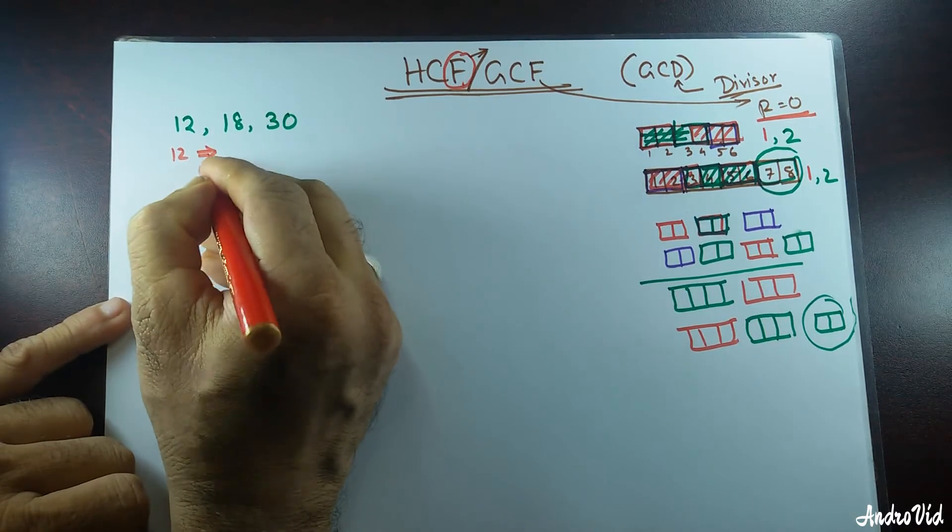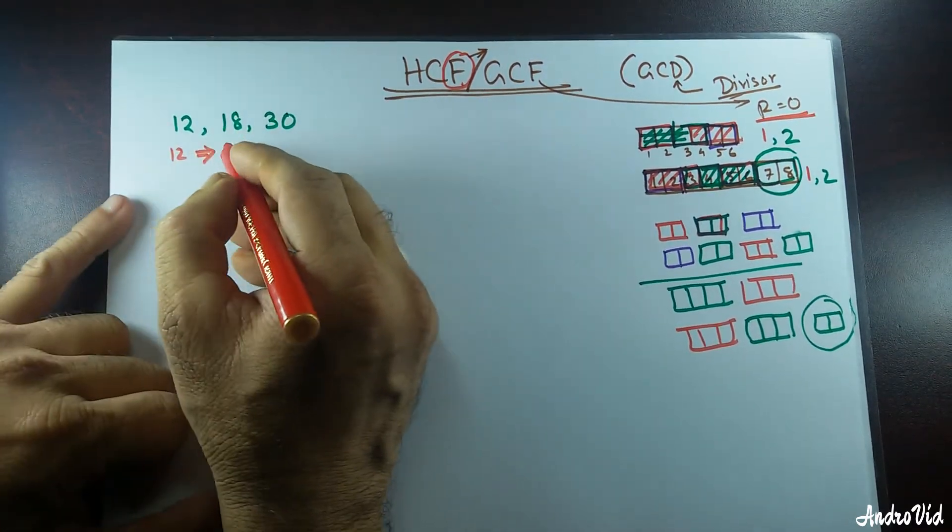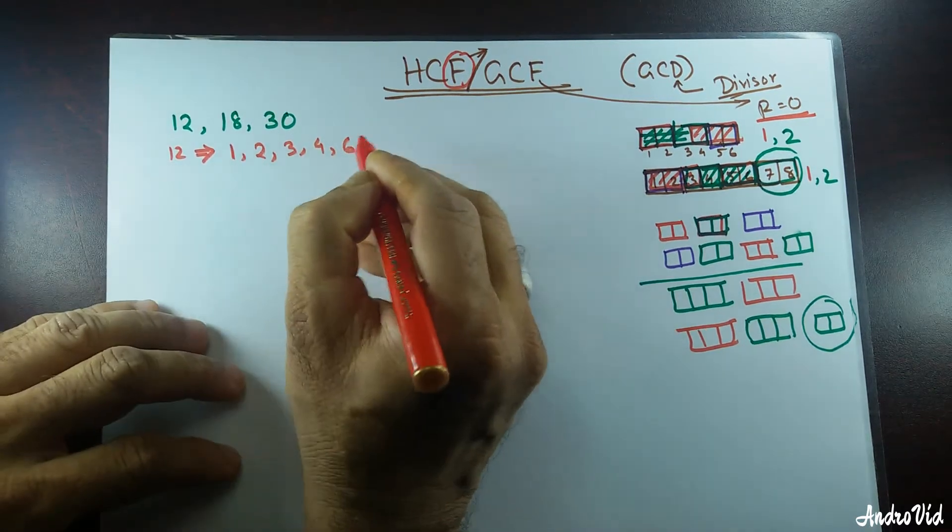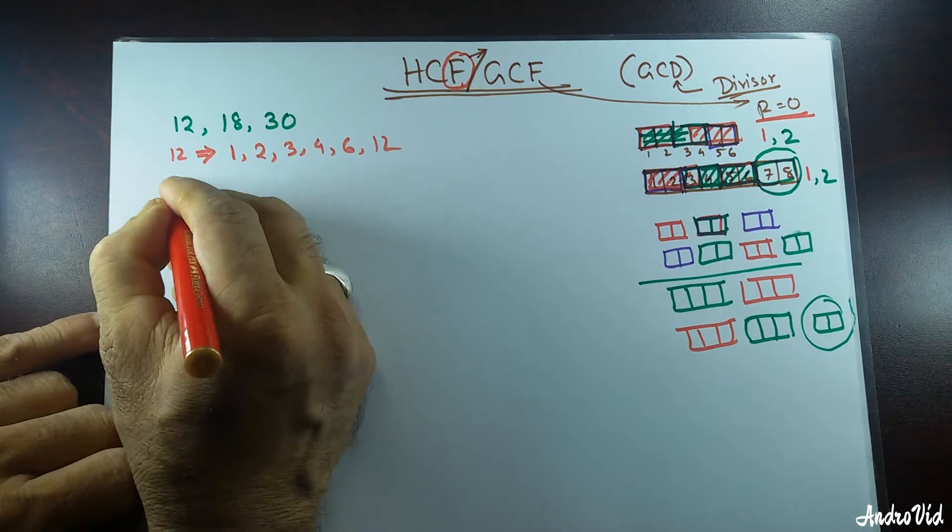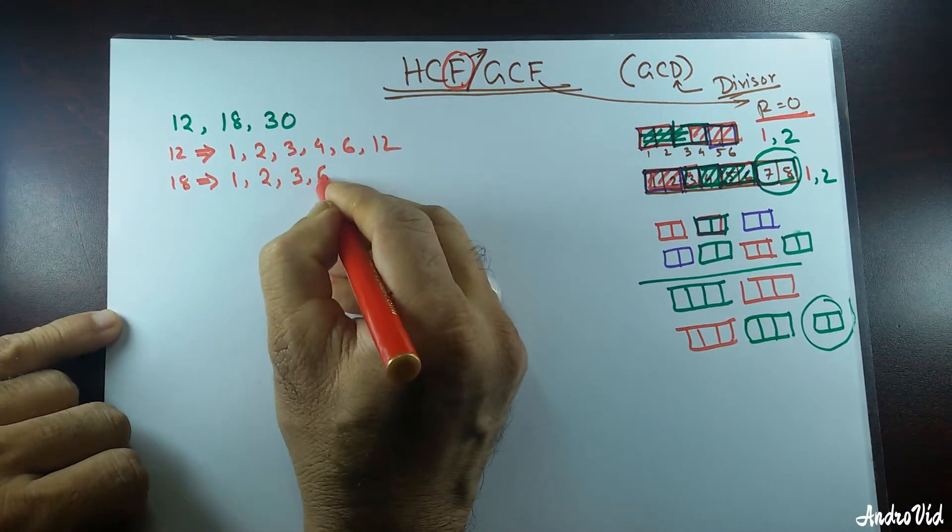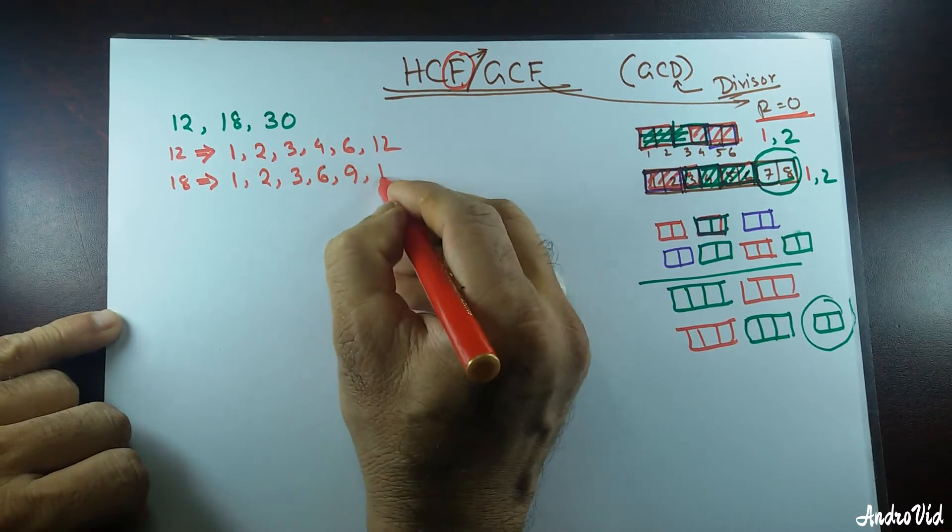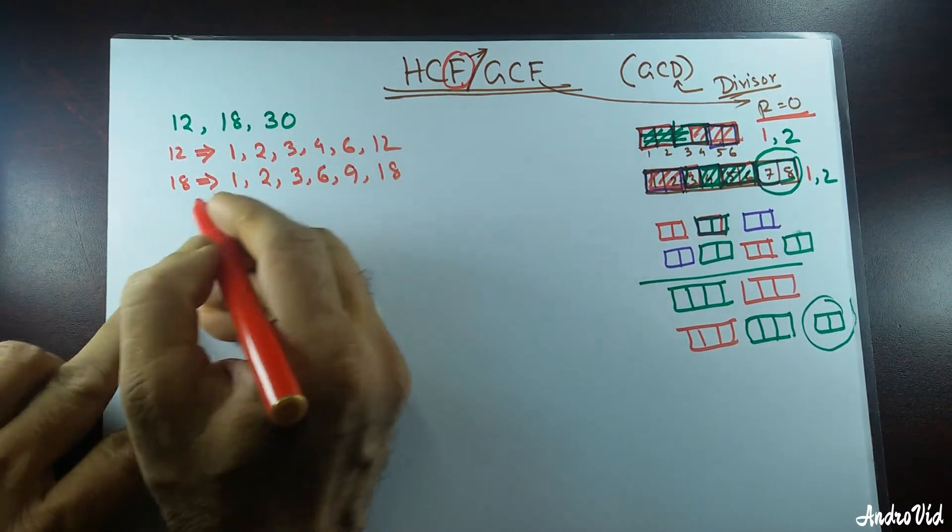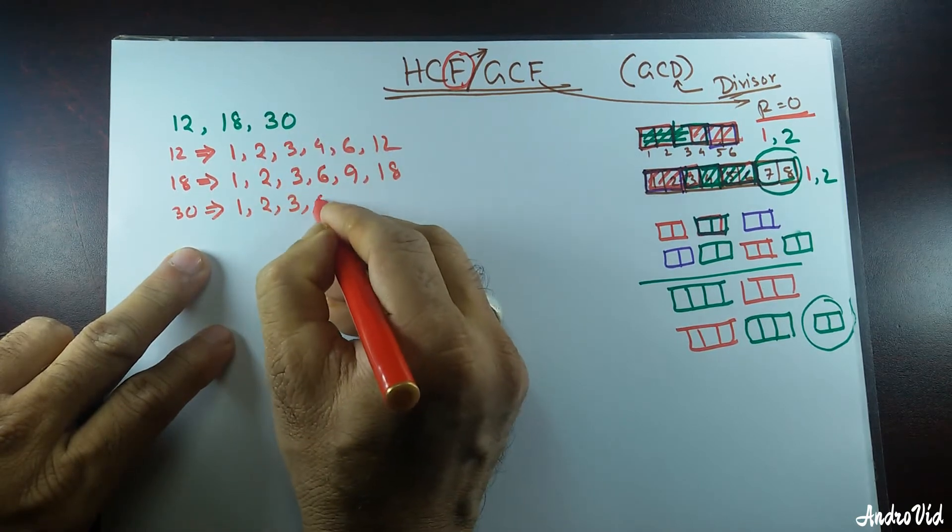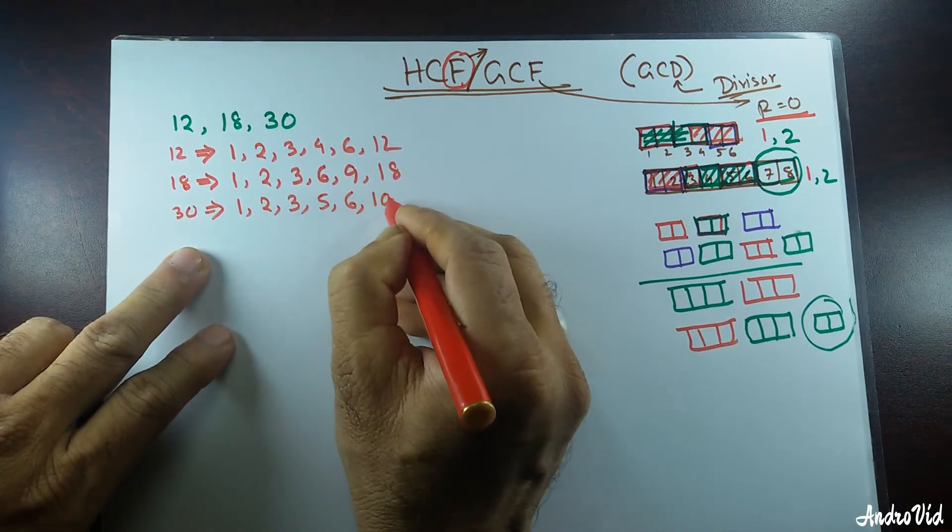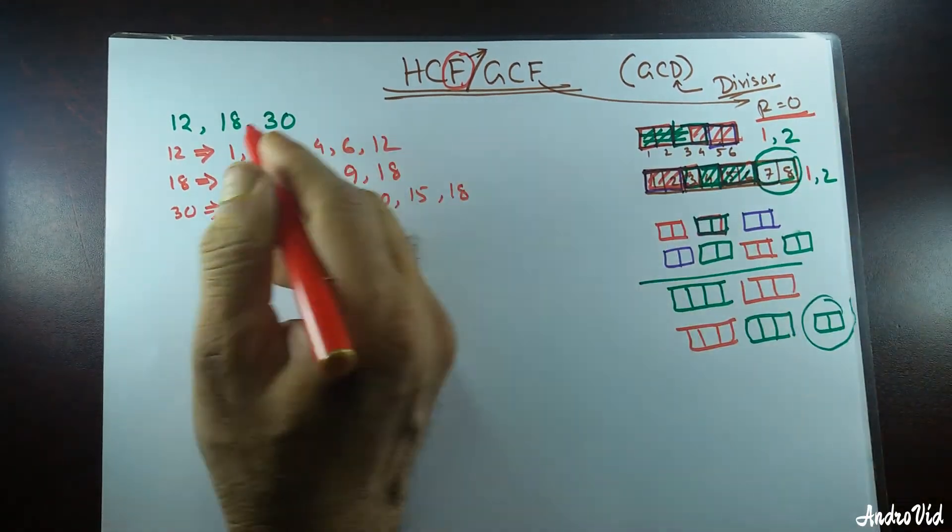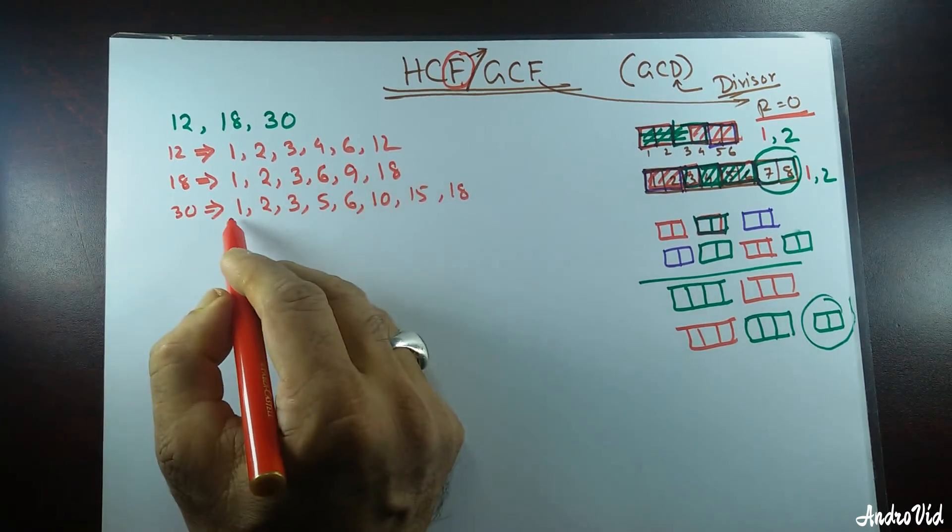We're going to express all these numbers as its factors, all the factors. 12 has factors: 1, 2, 3, 4, 6, and 12. All the factors of 18 are 1, 2, 3, then it doesn't go by 4, then 6, 9, then 18. For 30, I can divide it by 1, then 2, 3, doesn't go by 4, but 5, and then 6, then 10, then 15.